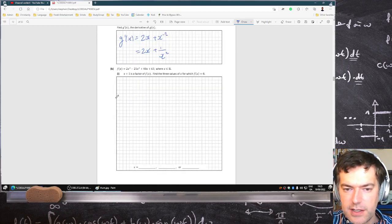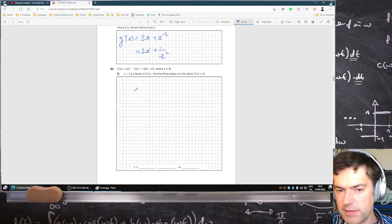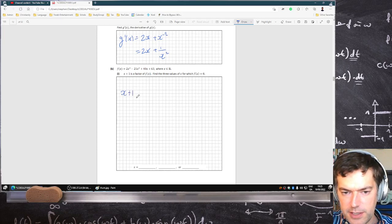f of x is that cubic, x plus one is a factor, find the three values of x. Okay, so we're given a factor and we have to solve it. Perfectly standard algebra question, a bit of long division here. So we know what one of the answers is already, minus one.